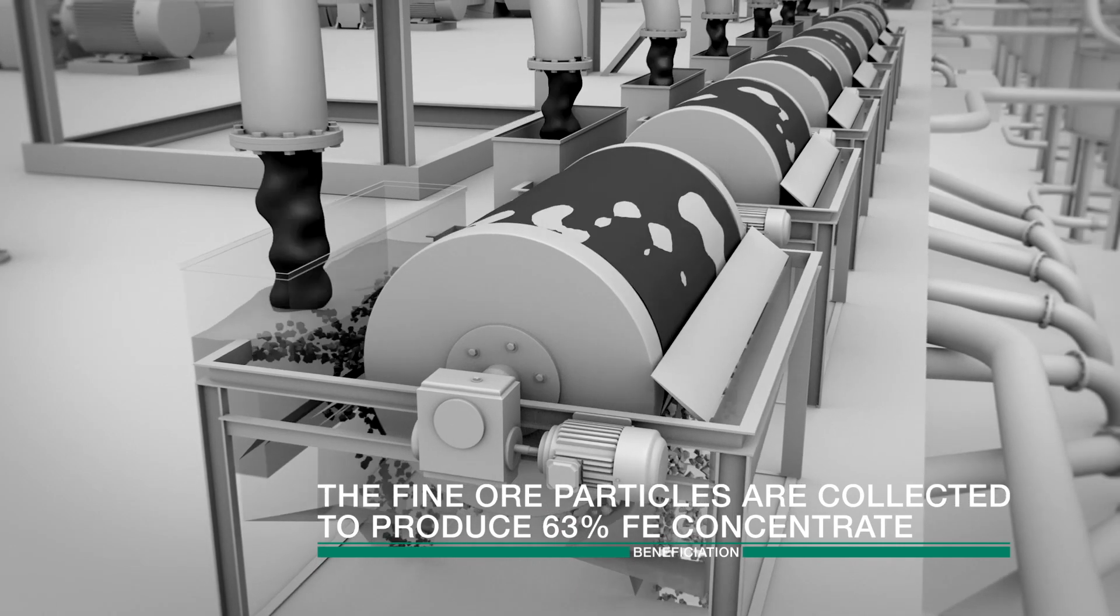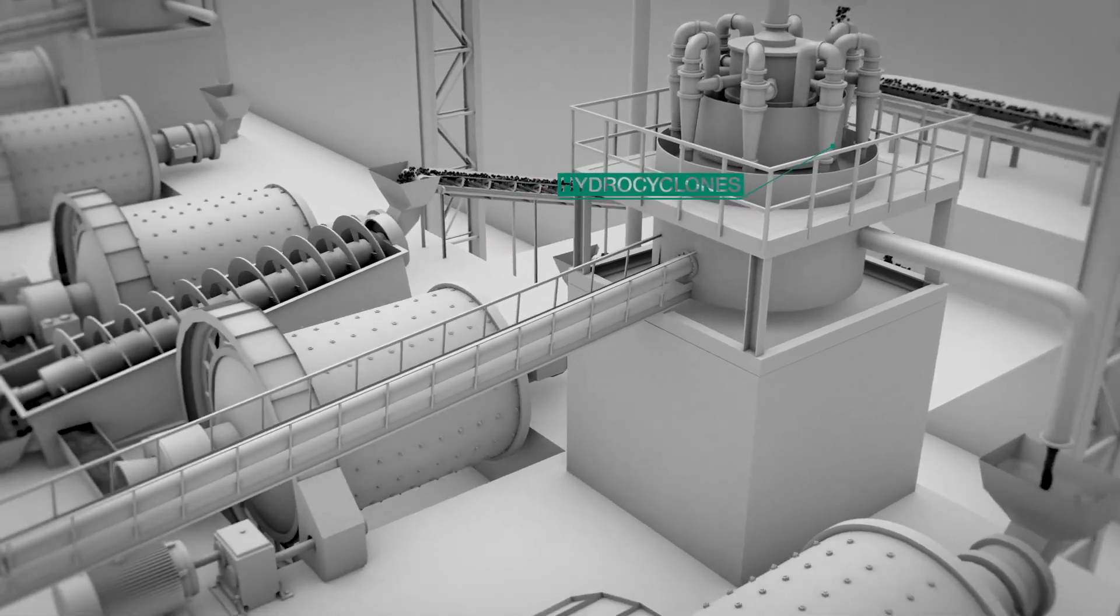Magnetic separators isolate the waste product, which is discarded to the tailing storage facility.